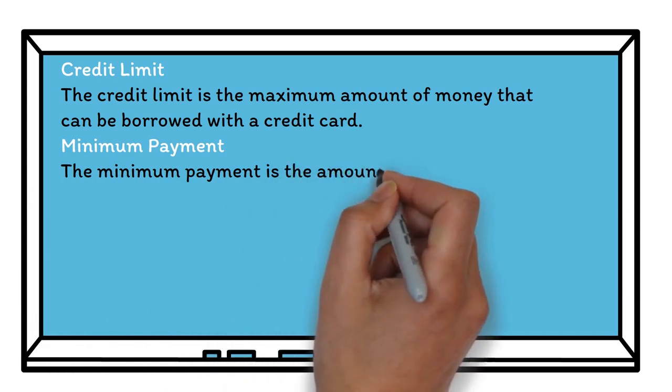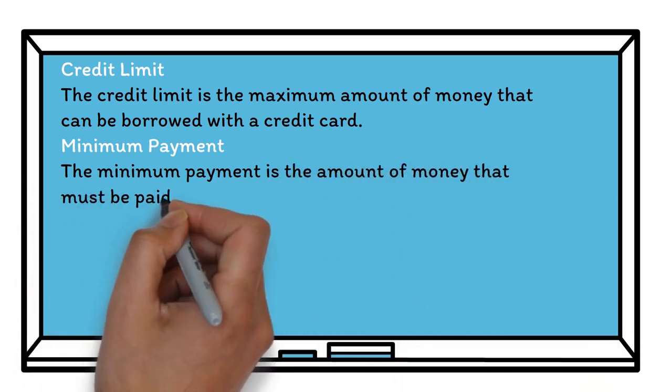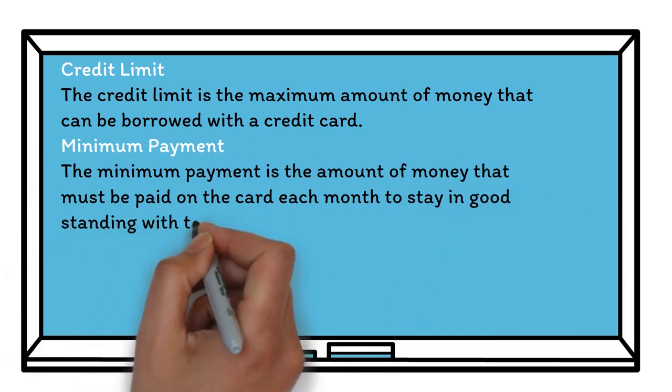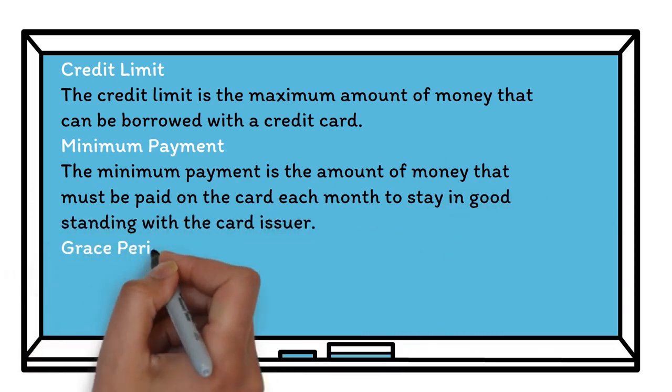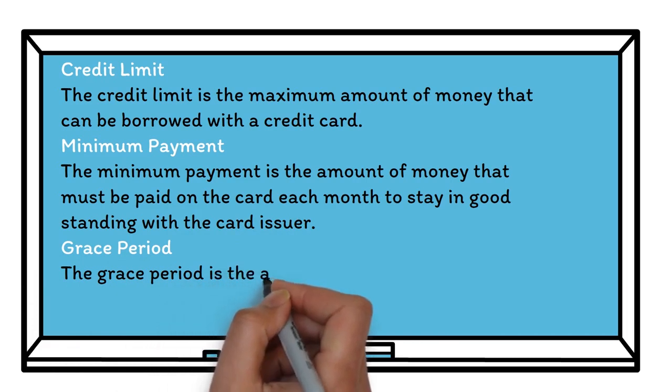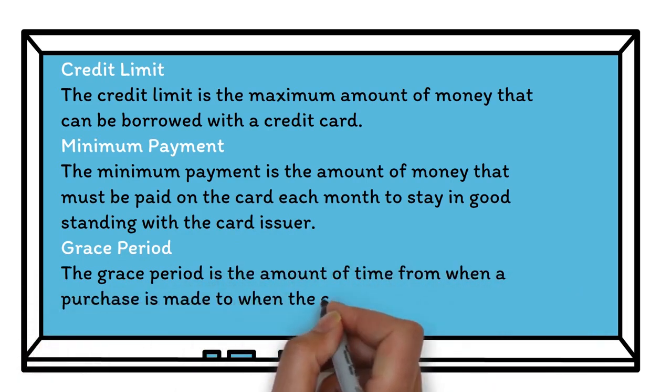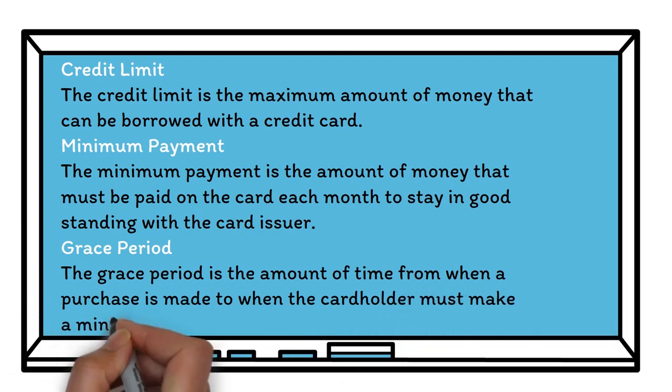Minimum Payment. The minimum payment is the amount of money that must be paid on the card each month to stay in good standing with the card issuer. Grace period. The grace period is the amount of time from when a purchase is made to when a card holder must make a minimum payment.